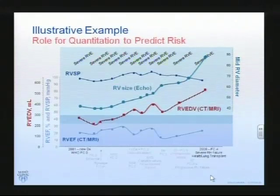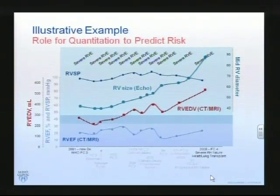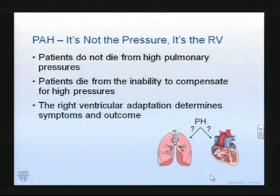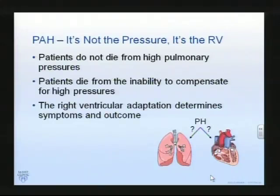Right ventricular size assessed by ECHO is also, when available, very helpful. In essence, patients don't die from high pulmonary artery pressures. They die from the inability of the right ventricle to compensate. That is essentially the problem in this condition, and to some extent it's fair to say that the adaptation determines outcome.